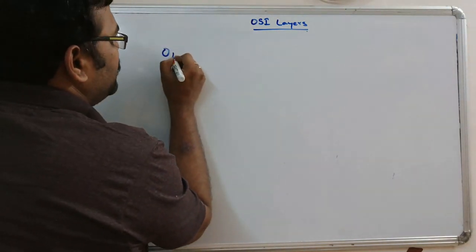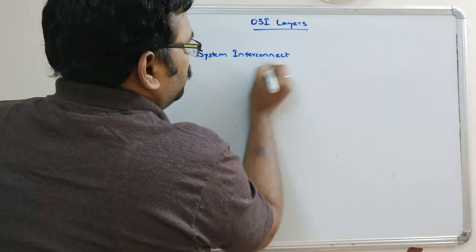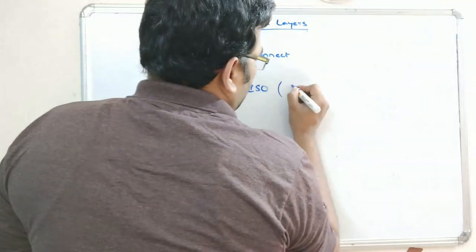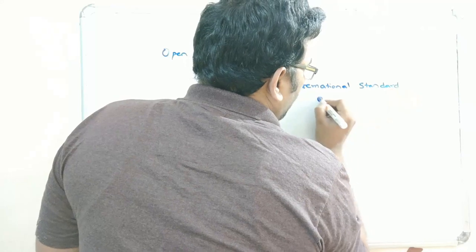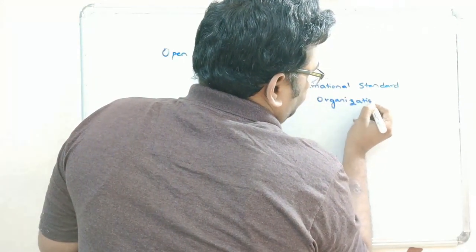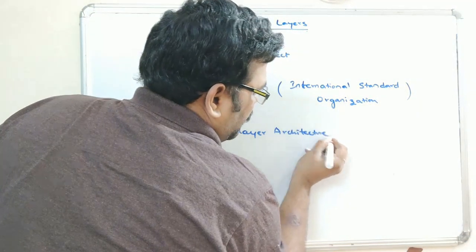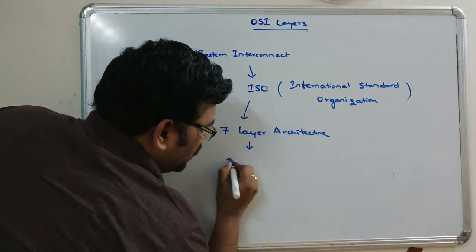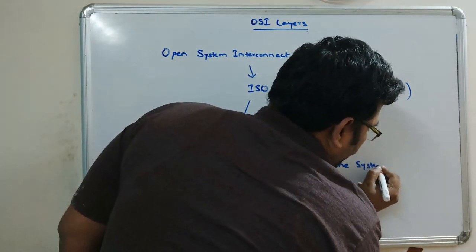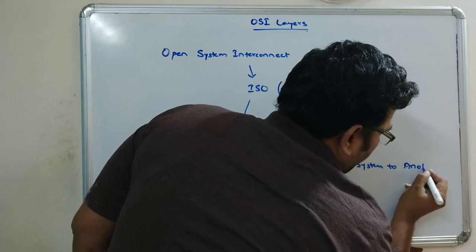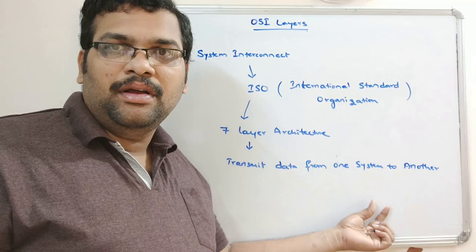OSI means Open System Interconnect, which was developed by ISO — that is, the International Standard Organization. This created a seven-layer architecture, which is used to transmit data from one system to another.